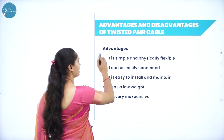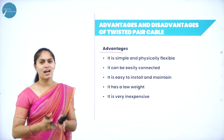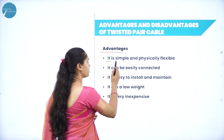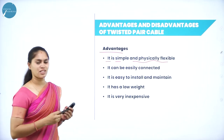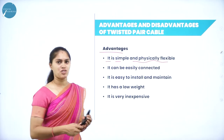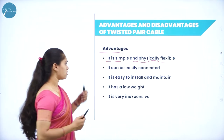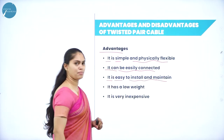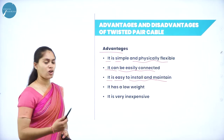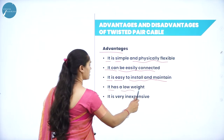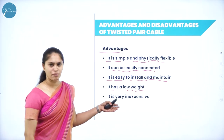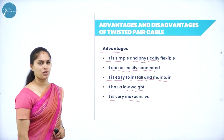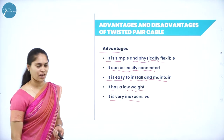Considering both UTP and STP, the advantages of twisted pair cable include: it is simple and physically flexible, can be easily connected, and is easy to install and maintain. It has low weight and is very inexpensive compared to other types of transmission media.